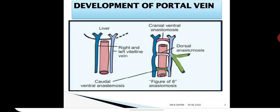The duodenum is in the middle, with right and left vitelline veins on each side. They are connected by three anastomoses to make the figure of eight — the cranial and caudal ventral anastomoses and the middle dorsal anastomosis. The green color veins represent the splenic vein and the superior mesenteric veins, which join at the left end of the middle dorsal anastomosis.